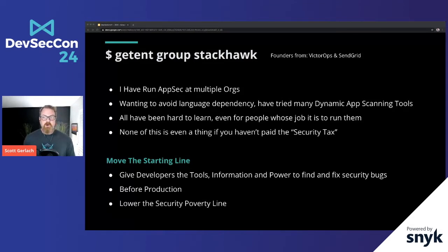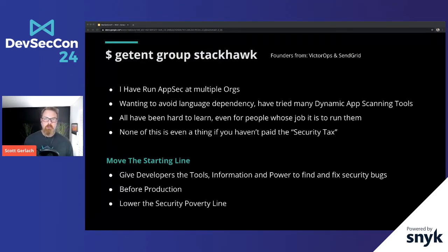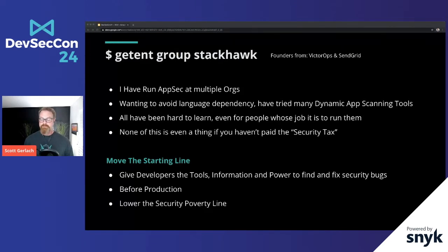So we searched for dynamic analysis tools to test the running app, because we knew if we could find anything with a running test, those were things we should certainly be fixing. With static code analysis tools, you sometimes get reports about a problem that isn't actually exposed in the product. All of these tools have been super hard to learn, even for people whose job it is to run them. If you're not using Burp or Zap four to six hours a day, it's super hard to figure out and get started.